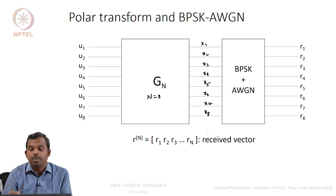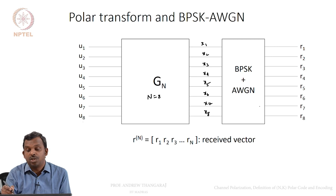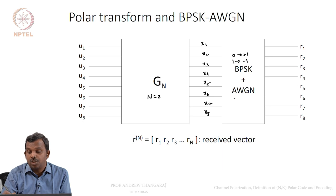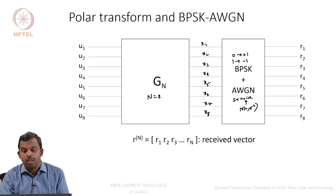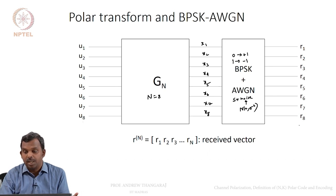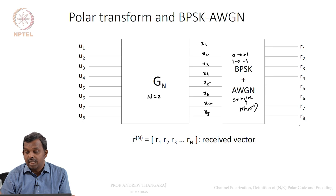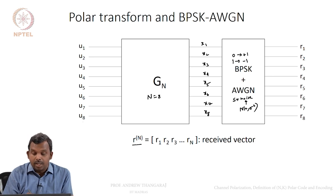These 8 bits are then transmitted through BPSK AWGN. In BPSK, 0 goes to plus 1 and 1 goes to minus 1. In AWGN, the received signal is S plus noise, where noise is normal with mean 0 and variance sigma squared. You create this noise and get received values — this is how a polar transform could potentially be used in the BPSK AWGN channel. RN is the received vector.